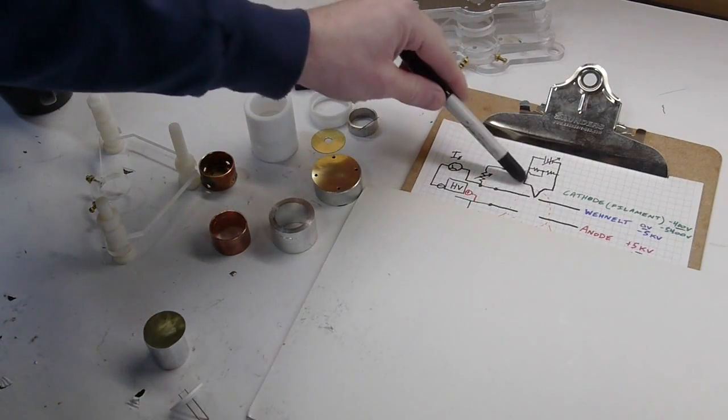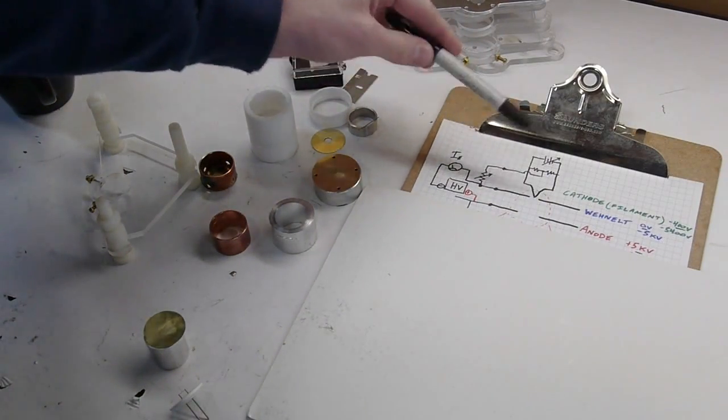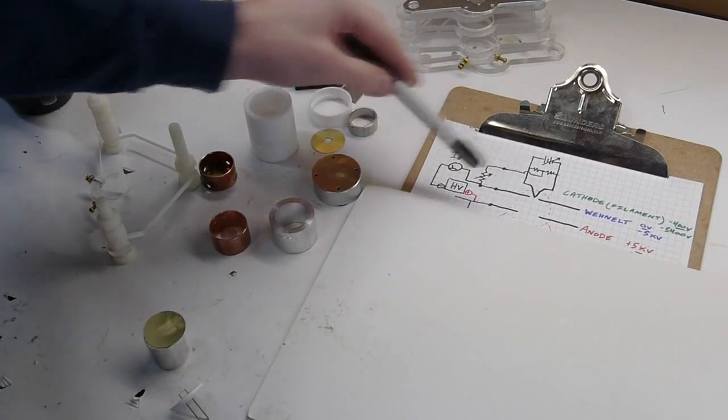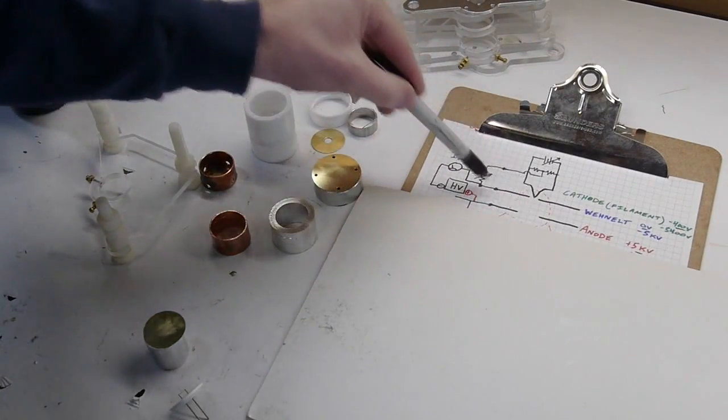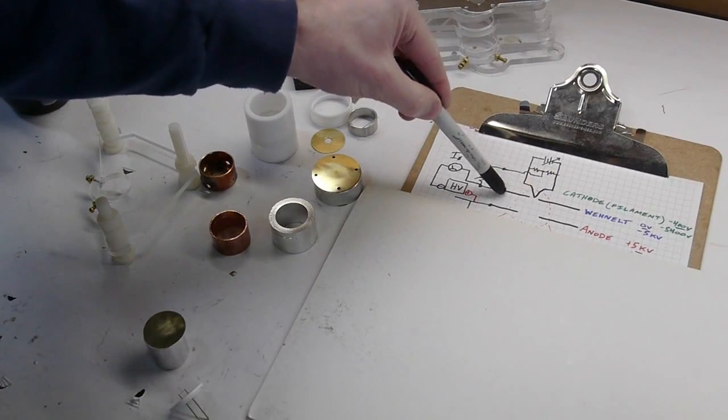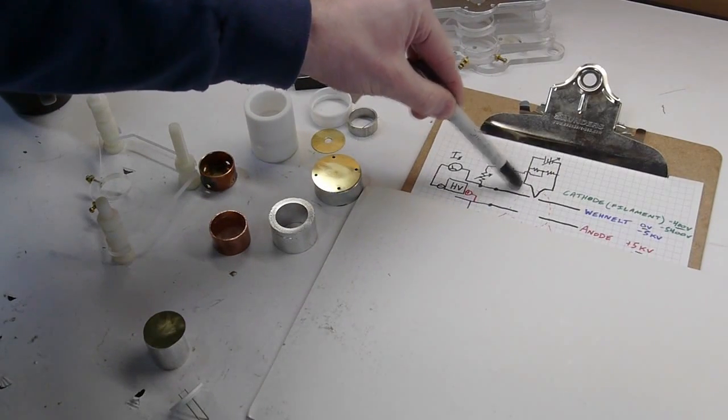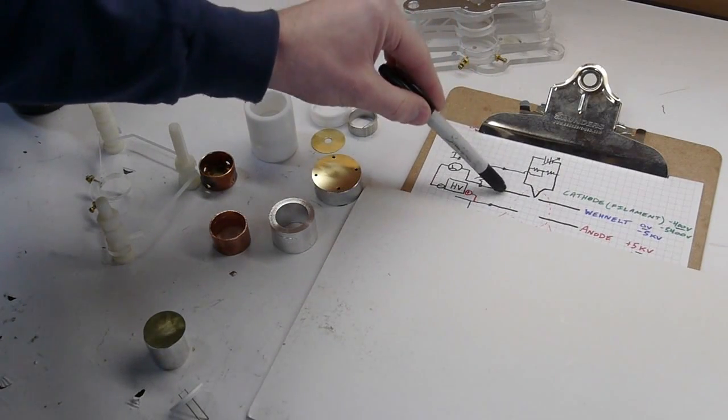Then there is a metal plate with a hole and this is known as the Wenelt cylinder, could also be thought of as a grid, and then below that there is the anode.